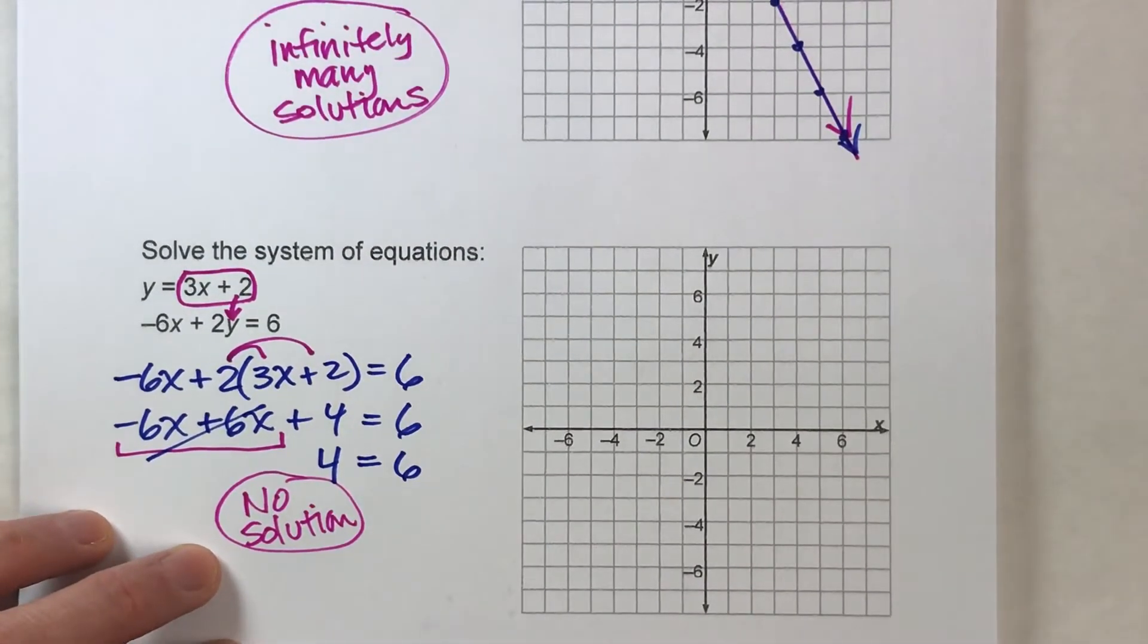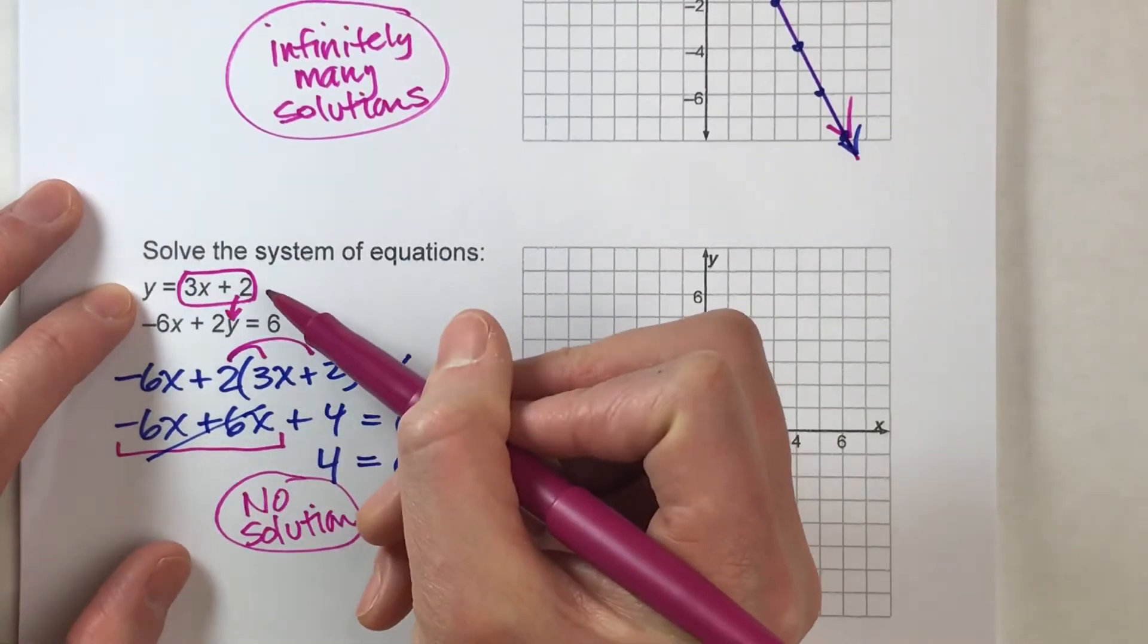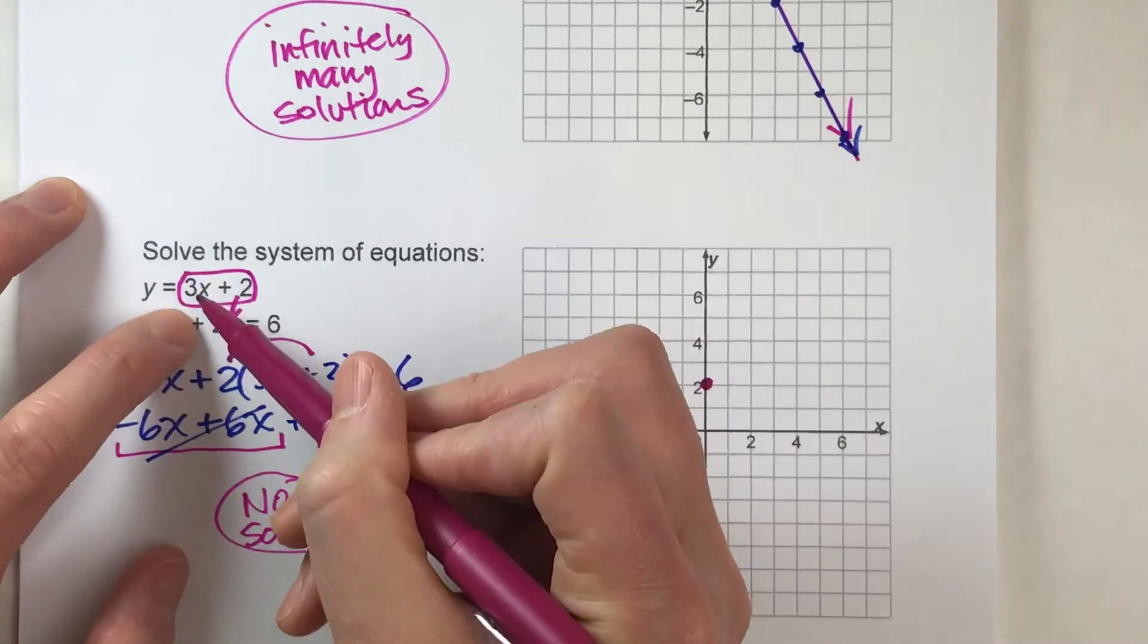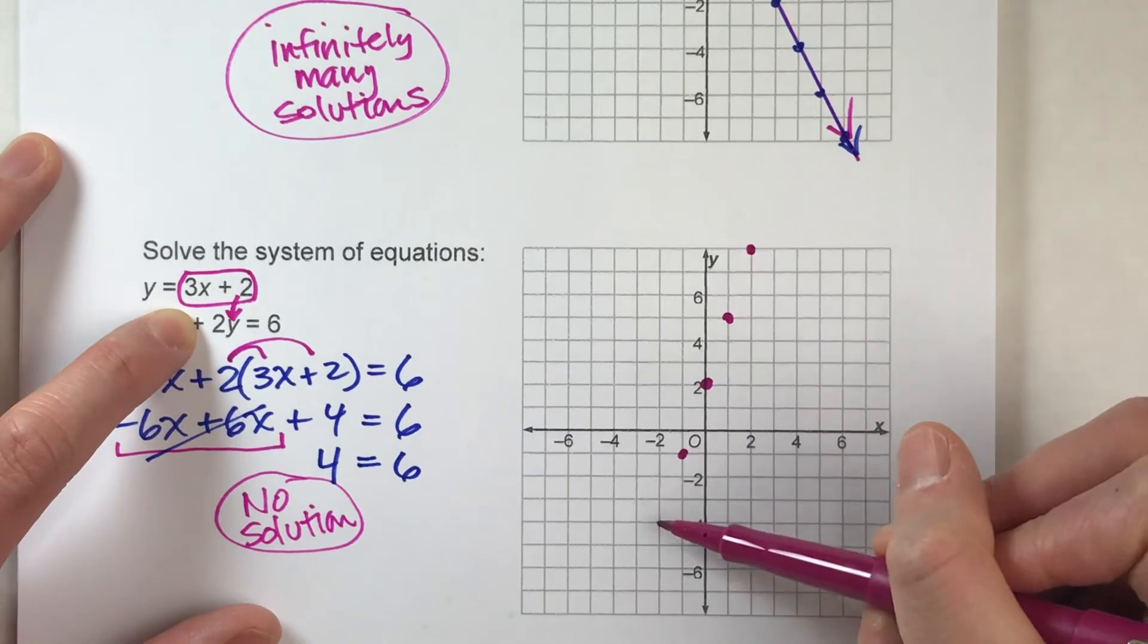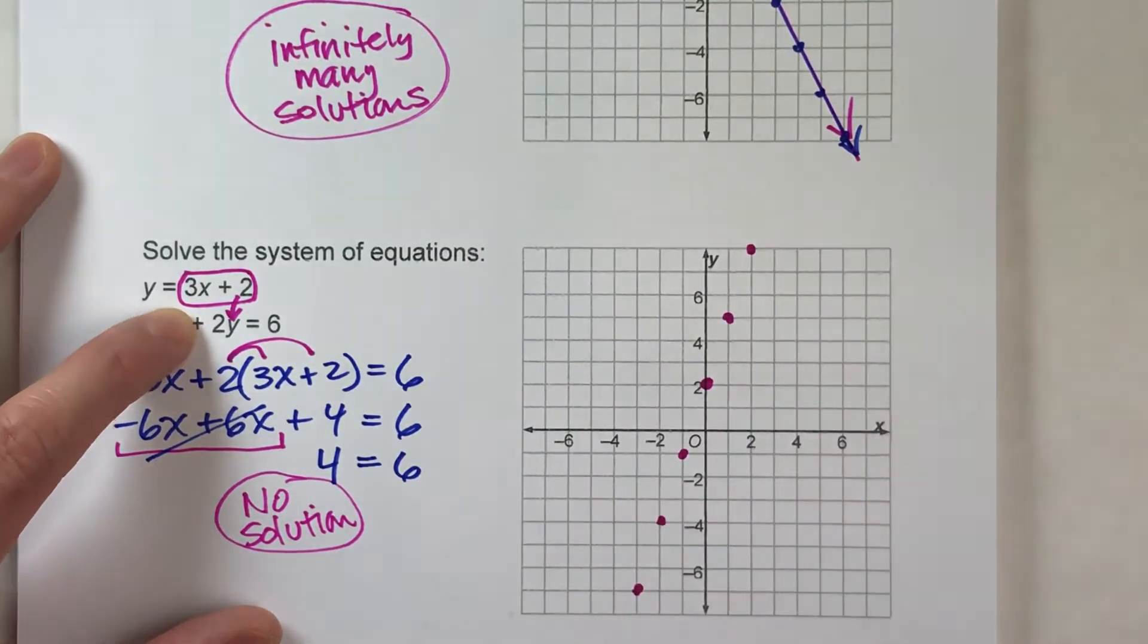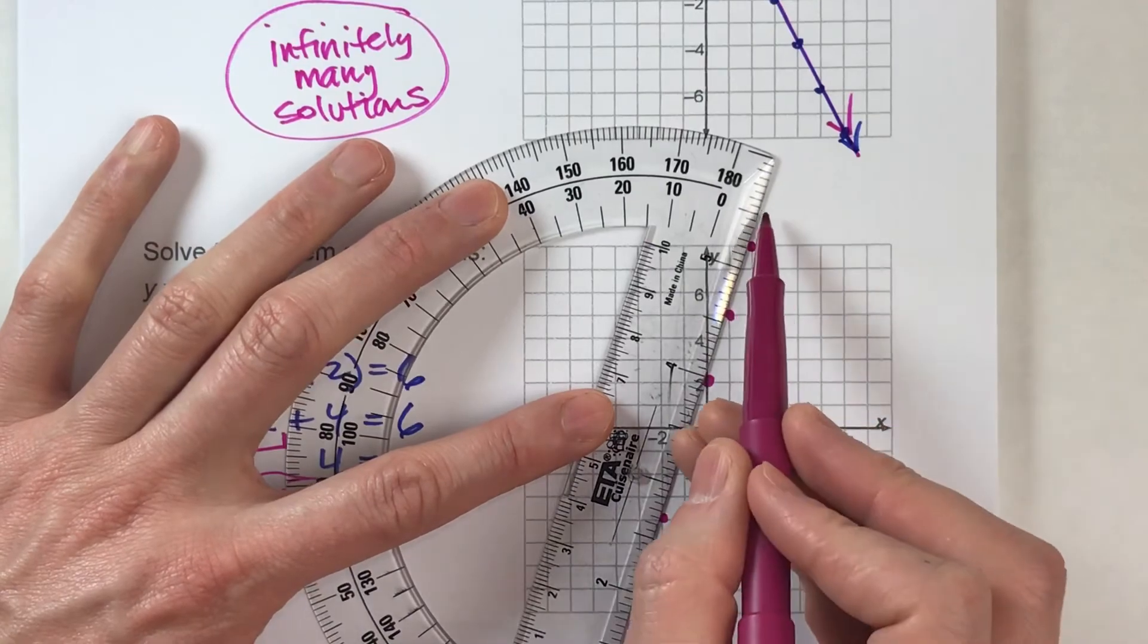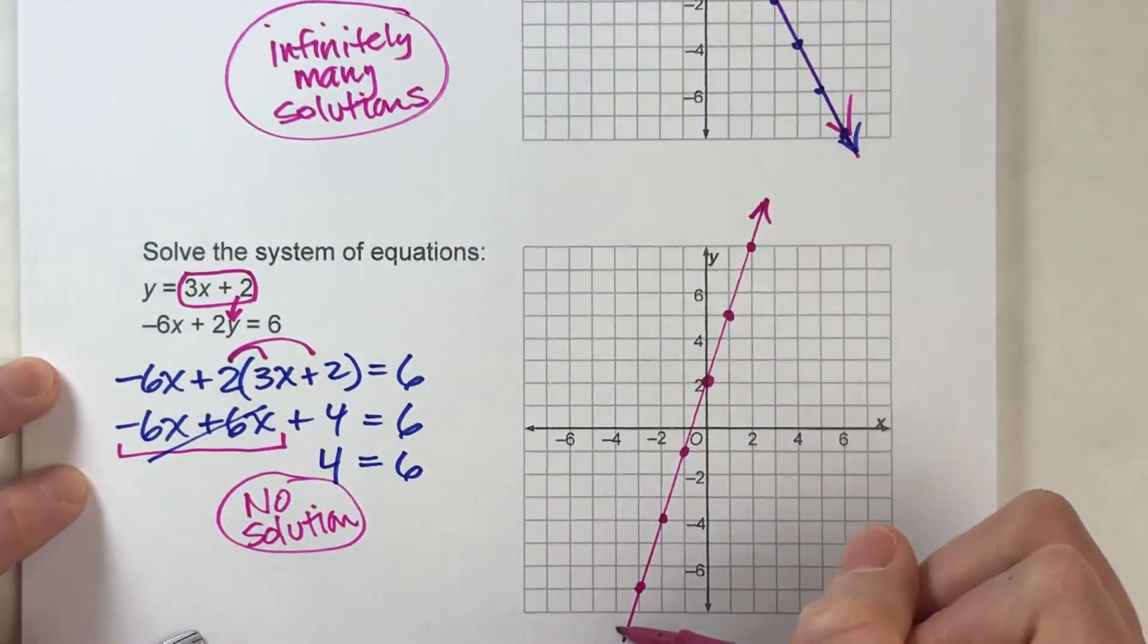So now let's graph this and see what this looks like. For this first one, y = 3x + 2, it's in slope-intercept form, so I'll plot the y-intercept at 2. My slope is 3, so up 3, right 1, up 3, right 1, and I'll continue the pattern the other way. And when I draw in my line, I'll have my first graph.